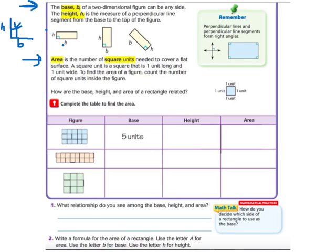Okay, then it says the area is the number of square units needed to cover a flat surface. A square unit is a square that is one unit long and one unit wide. To find the area of a figure, count the number of square units inside the figure. So if we looked in here and we're finding the area, you would just count how many blocks there were inside. But there's an easier way to do that, which we're going to learn in just a second.